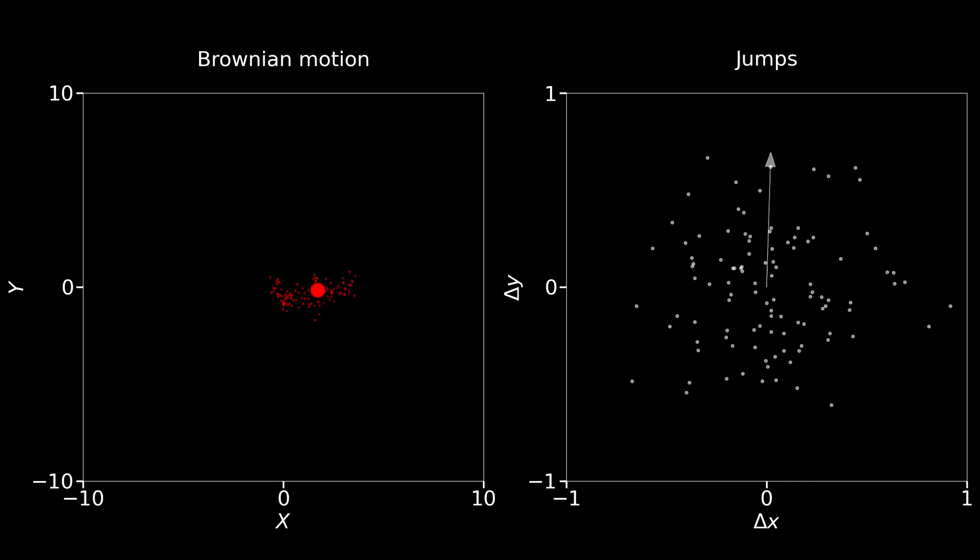In this plot, I am showing you, on the left, the position of the particle subject to Brownian motion. On the right, I am plotting all the jumps that the particle does at each time step of size tau.